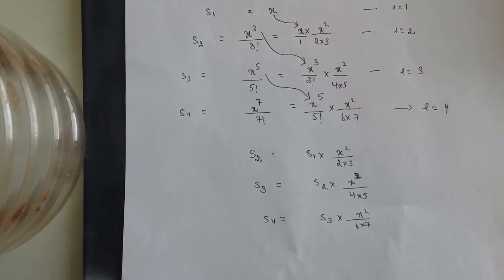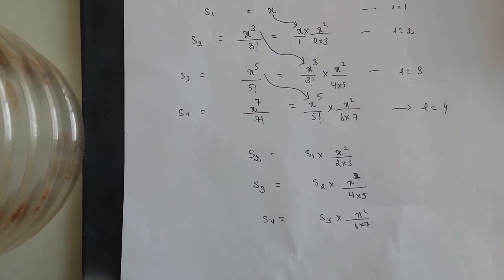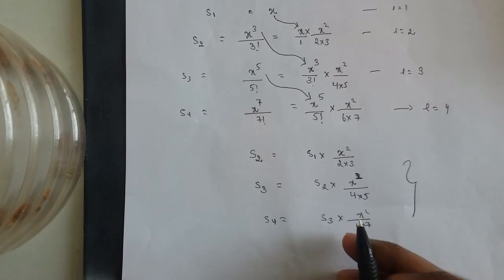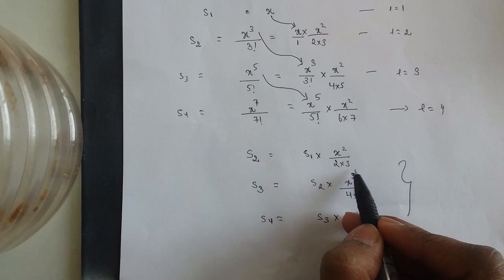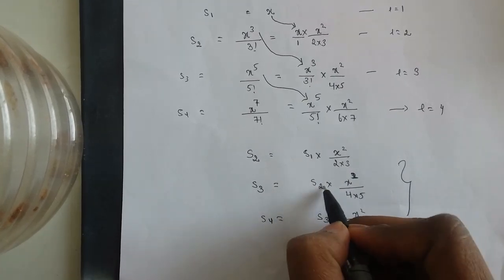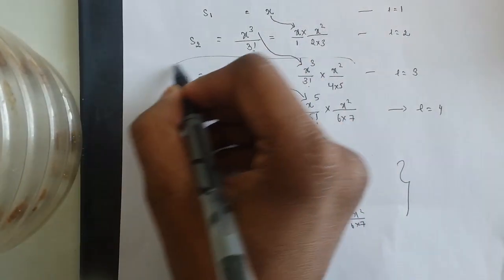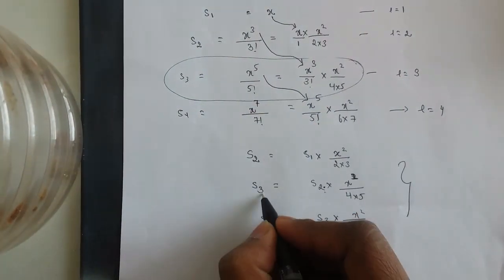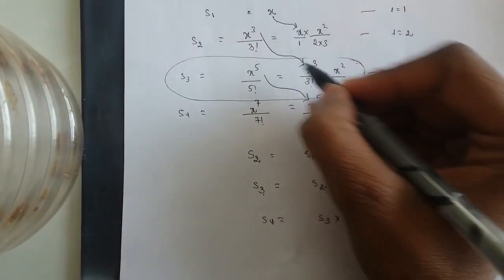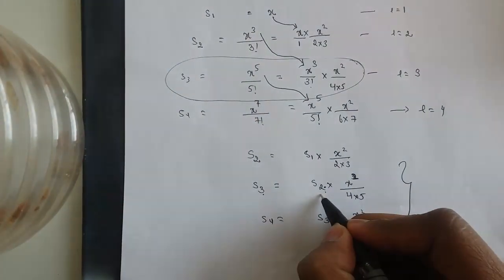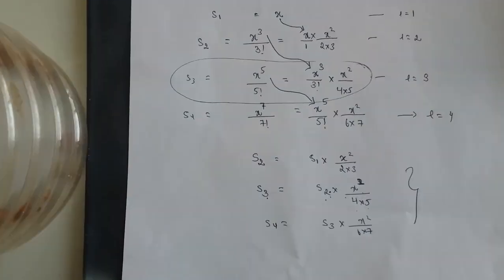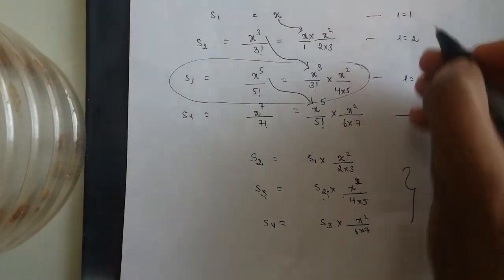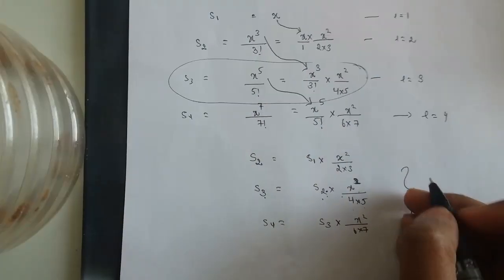We can relate each term with the previous term. s2 can be written as s1 · (x² / (2·3)). s3 can be written as s2 · (x² / (4·5)). The one thing I am going to change is the numbering, because in programming our counting starts from 0.